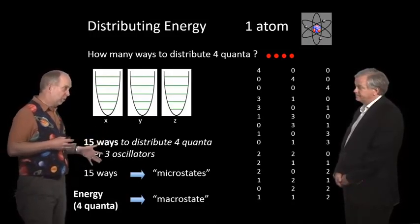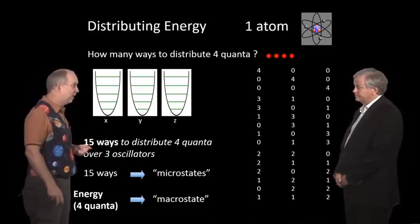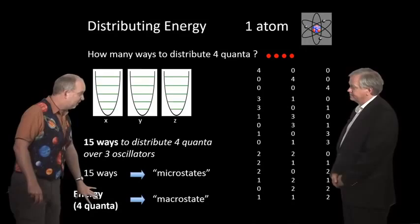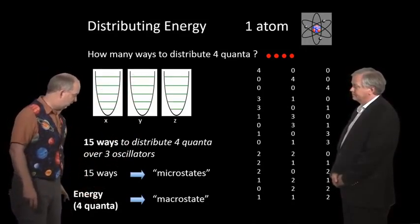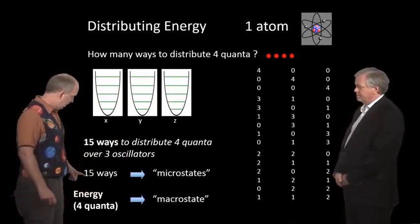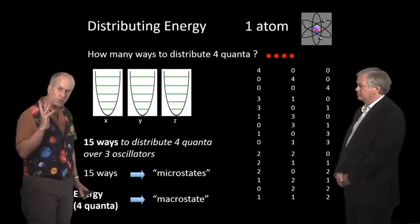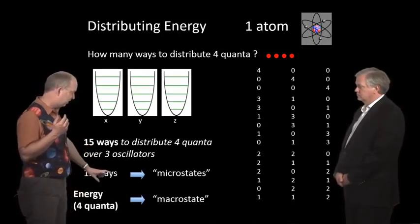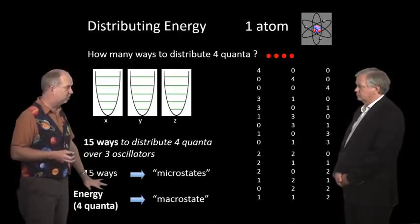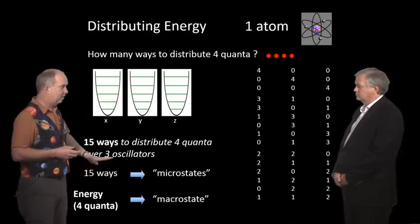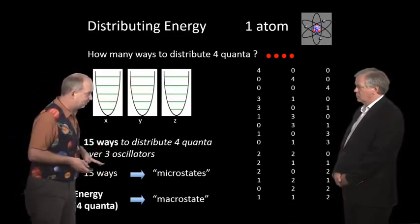Now, we're talking about the subject called statistical thermodynamics. The total amount of energy, which in this case is four quanta, is called the macrostate. Yep. And the microstates are the different ways you can distribute those quanta. So in this case, these are the microstates. We have one macrostate, four quanta, and in this case, 15 microstates.